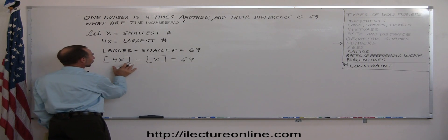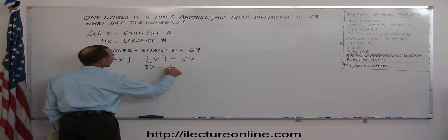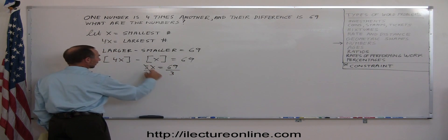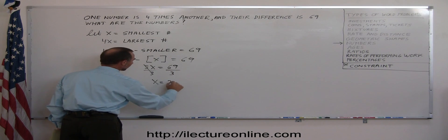Now we can solve for 4x minus x, that's 3x, equals 69. Divide both sides by the coefficient in front of x. That cancels out, so x equals, that would be 23.